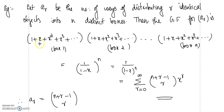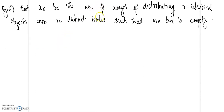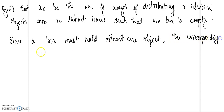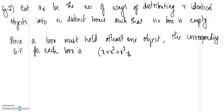In the previous problem there was no restriction, so a box could be empty. In this problem the boxes must be non-empty, so the constant term 1 (representing zero objects) is removed. Since each box must hold at least one object, the corresponding generating function for each box starts from x.